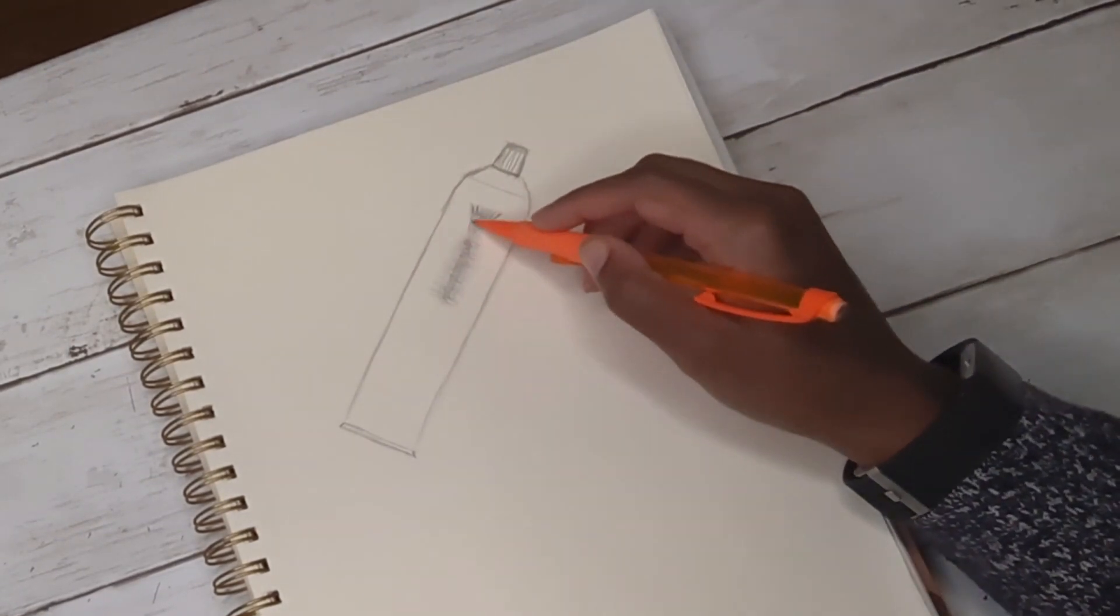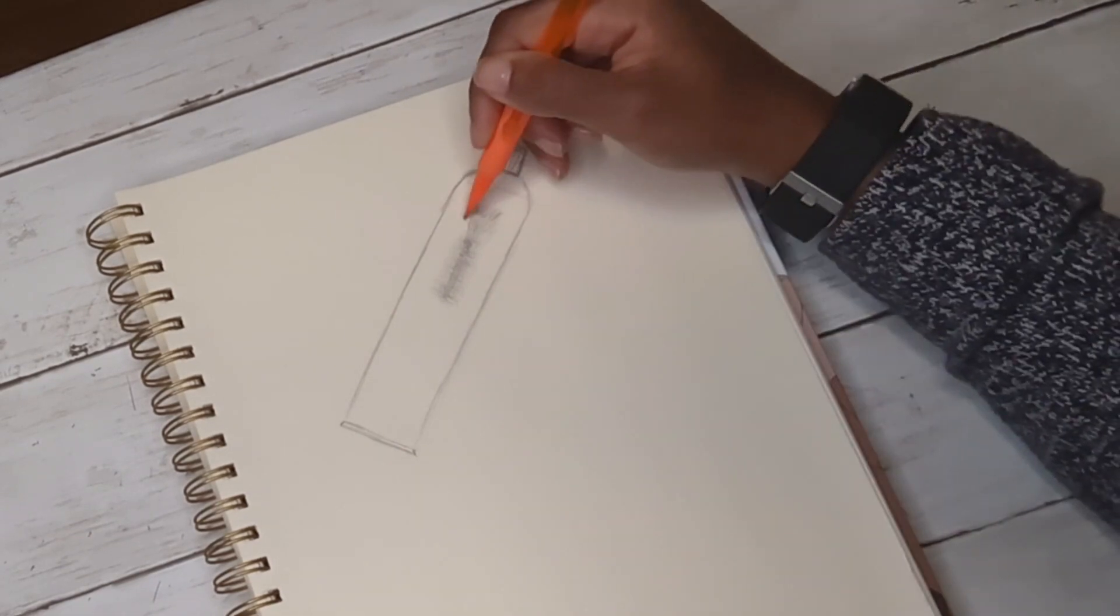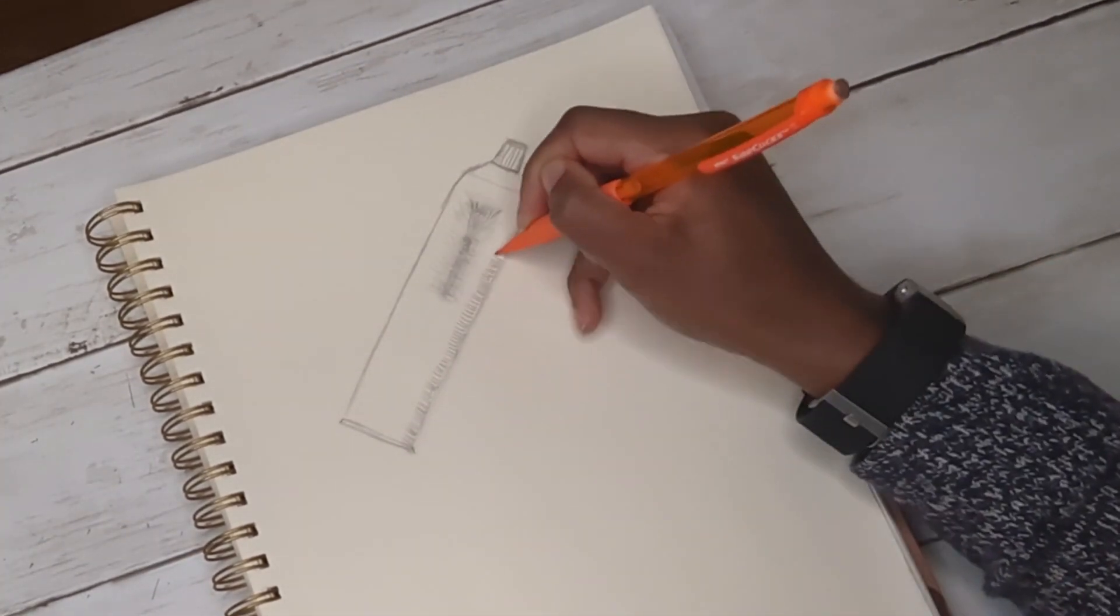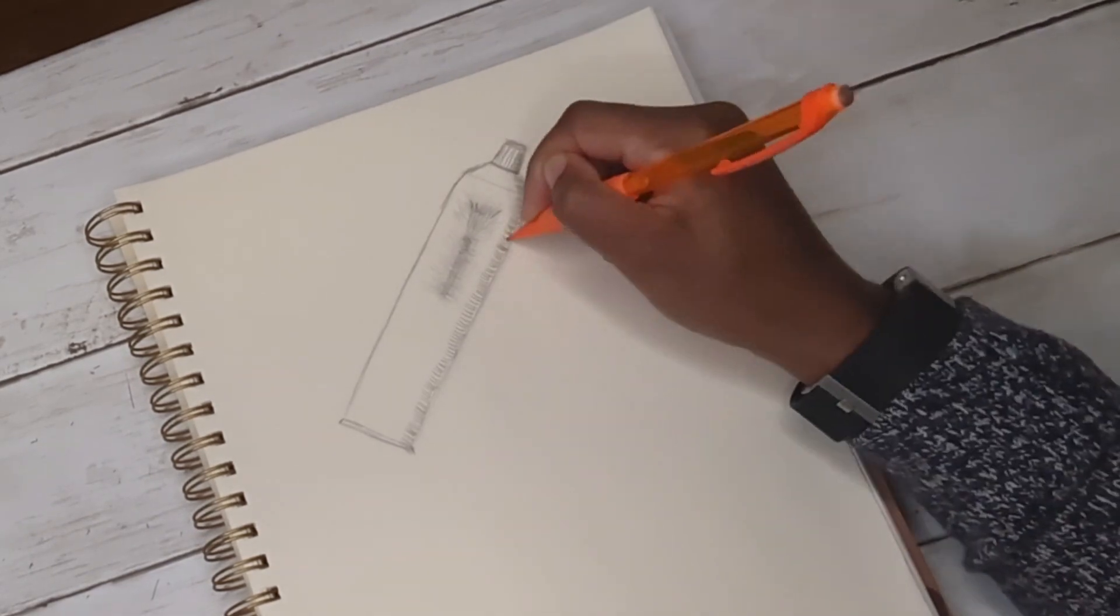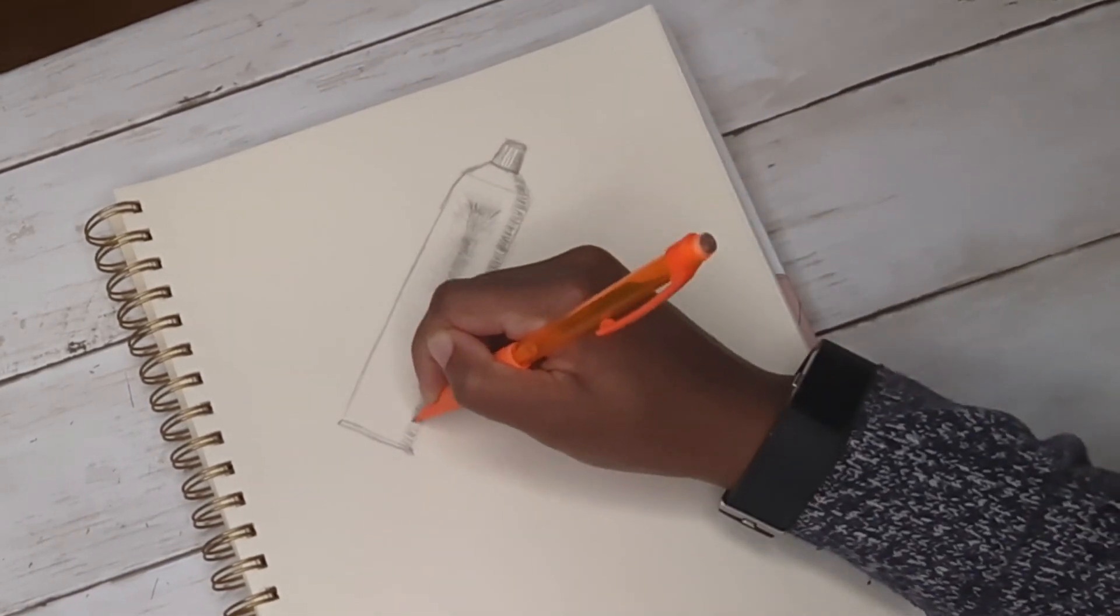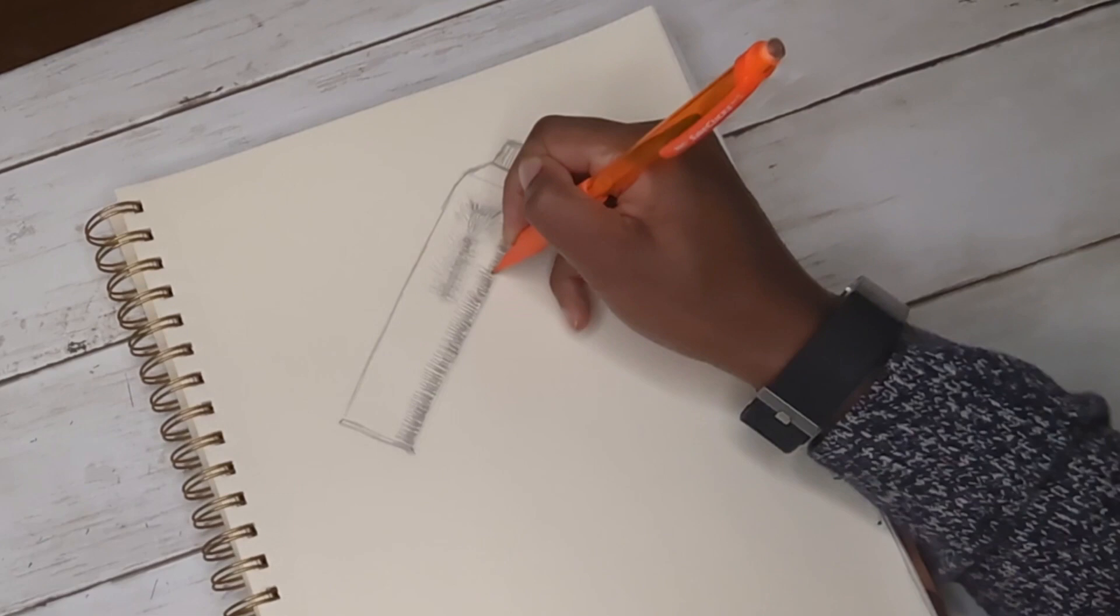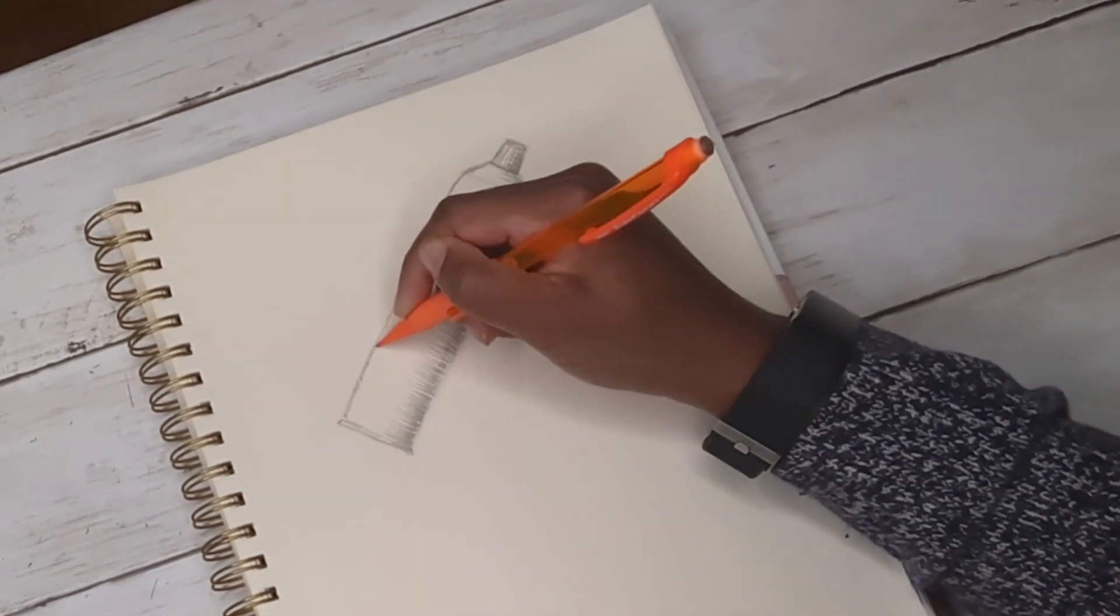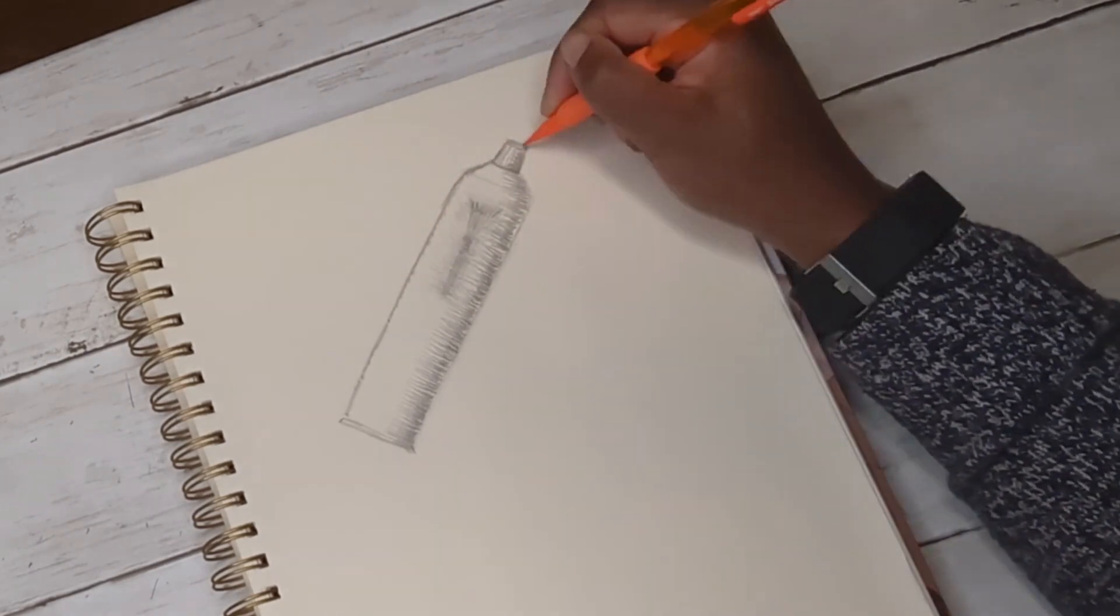What I'm doing right here is adding shadows at the center of the tube to provide a visible indentation, showing where I push down on the toothpaste. If you're team squeeze in the middle, leave a comment below.